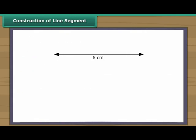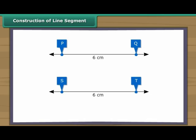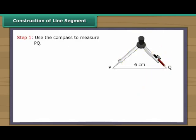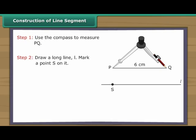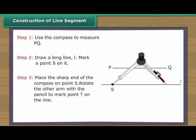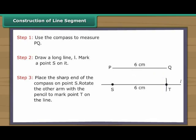Suppose a six centimetre long line segment PQ is given. We want to create another line segment ST of the same measurement. How do we do it without using a ruler? Use the compass to measure PQ. Draw a long line L and mark a point S on it. Place the sharp end of the compass on point S. Rotate the other arm with the pencil to mark point T on the same line. We have a line segment ST which is a copy of the line segment PQ.